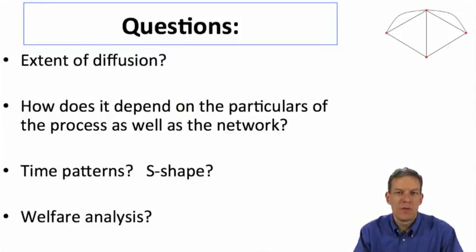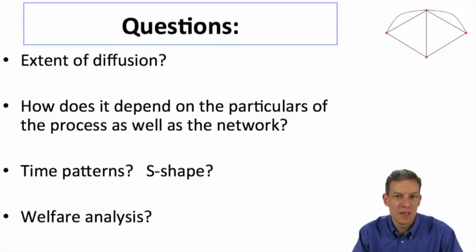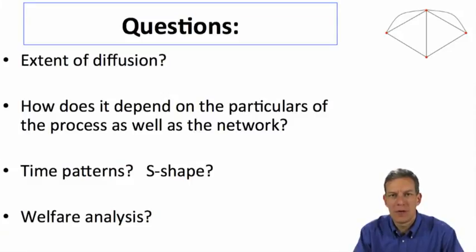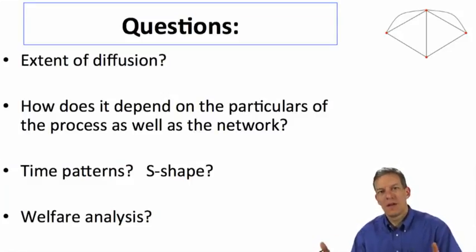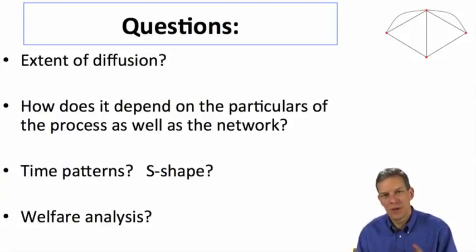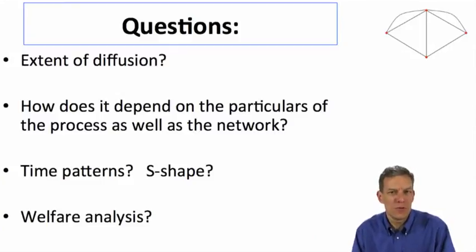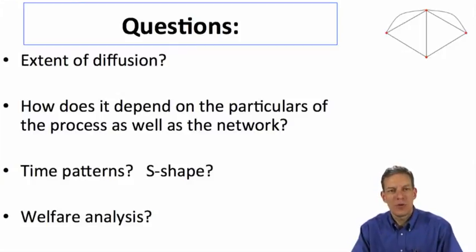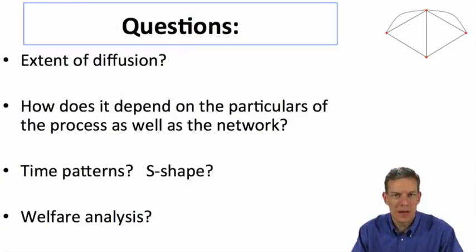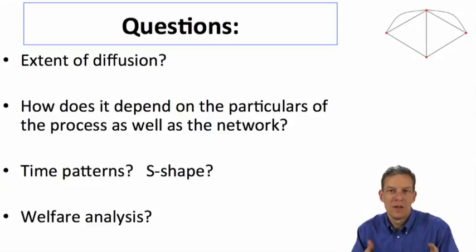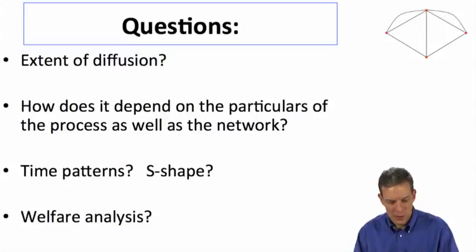Key questions that come up: What is the extent of diffusion? How does it depend on the particulars of network structure? Can we say something about these time shapes — where does the S-shape come from? Can we say something about welfare analyses? If you want to accelerate diffusion — like ensuring corn spreads quickly — how would you do that? If you want to prevent a flu from diffusing, who would you vaccinate? There's a whole series of questions we can begin to analyze using diffusion and modeling the network process.